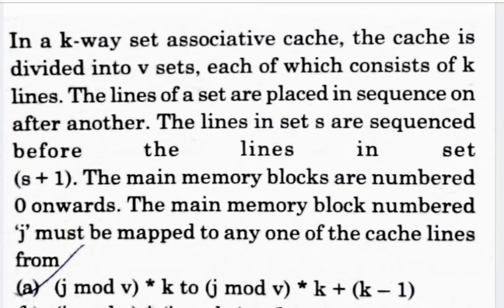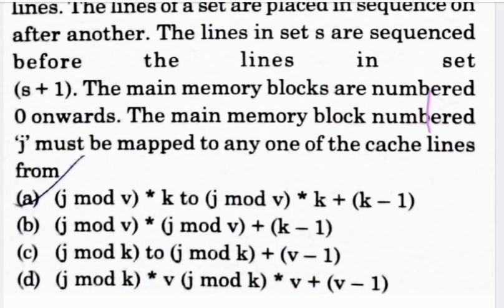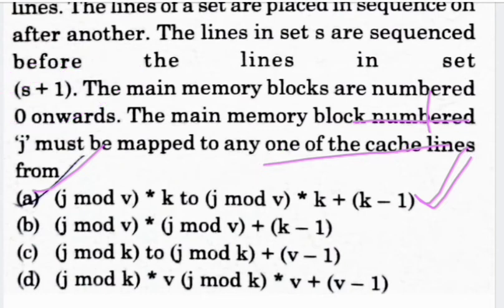Next question: in a kv set-associative cache, the cache is divided into v sets each consisting of k lines. Lines in set s are sequenced before lines in set s+1. Main memory blocks are numbered from zero onwards. The main memory block number j must be mapped to any one of the cache lines from j mod v × k to (j mod v × k) + k − 1. Option A is your correct answer.